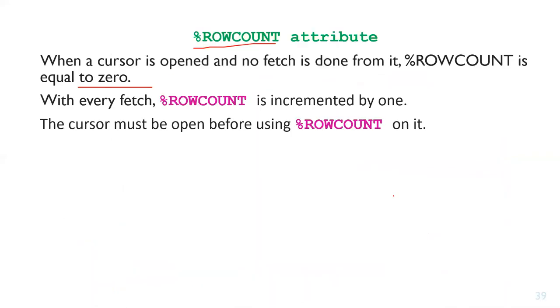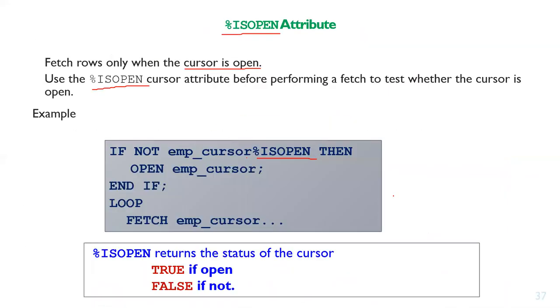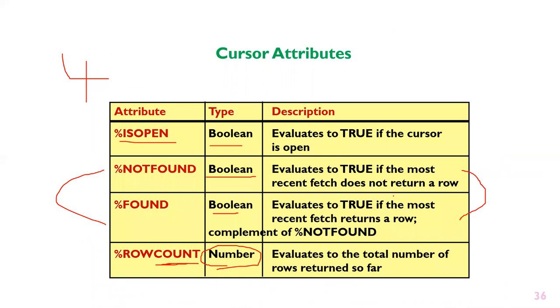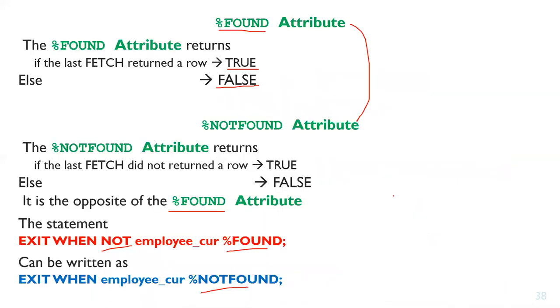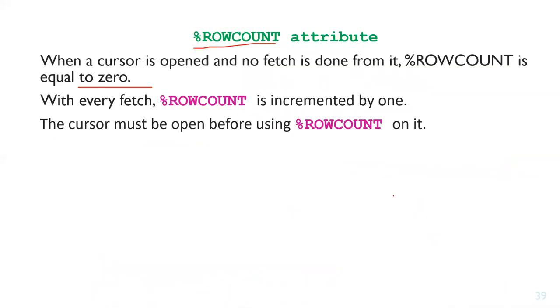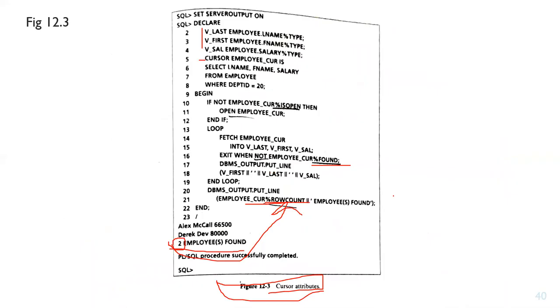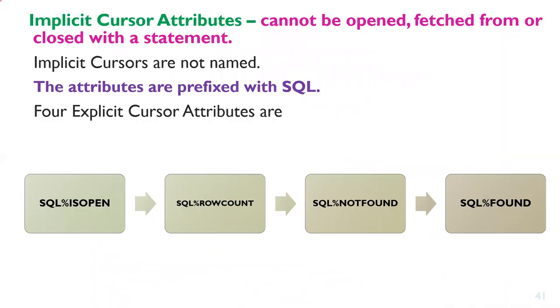To summarize the four explicit cursor attributes: %ISOPEN, %NOTFOUND, %FOUND, and %ROWCOUNT.